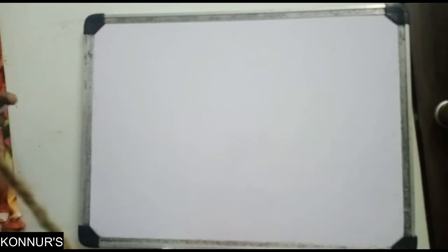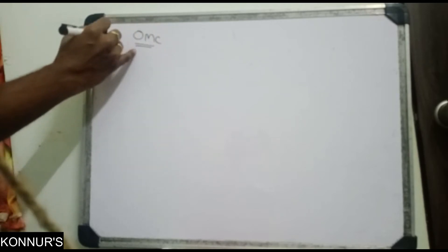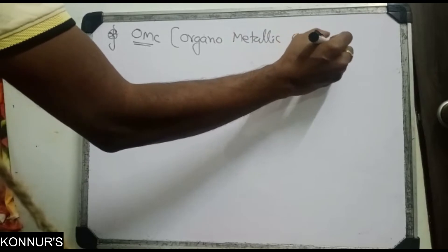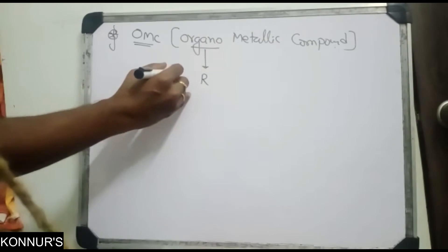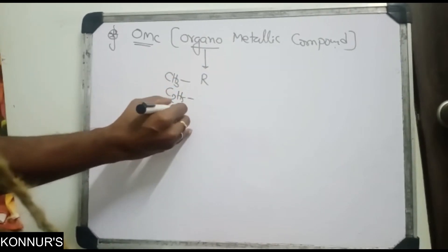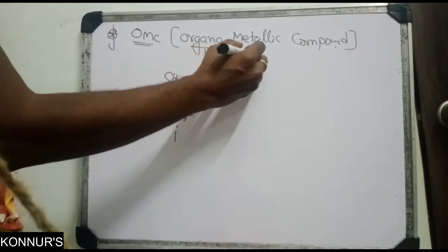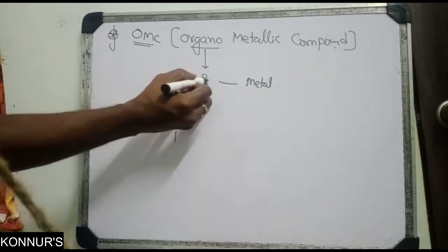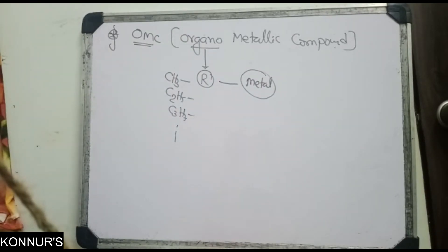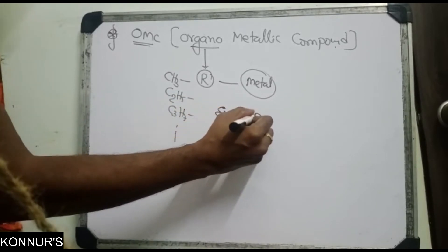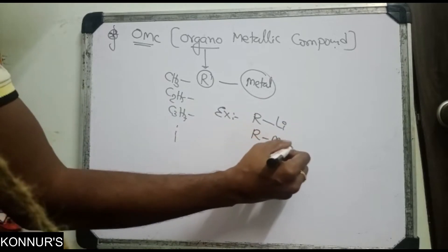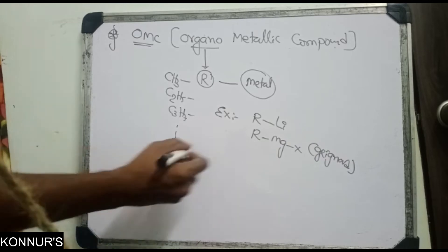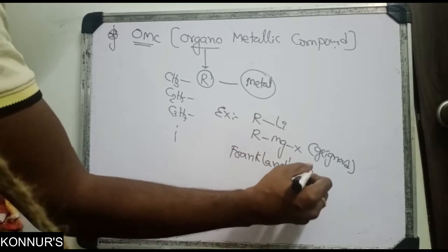Now we discuss a small concept: OMC — organometallic compounds. The name itself says 'organo' means hydrocarbons (CH3, C2H5, C3H7, etc.) combining with a metal. The R group must be directly connected with the metal. Examples include RLi (organolithium), RMgX (Grignard reagent), and R2Zn (Frankland's reagent).